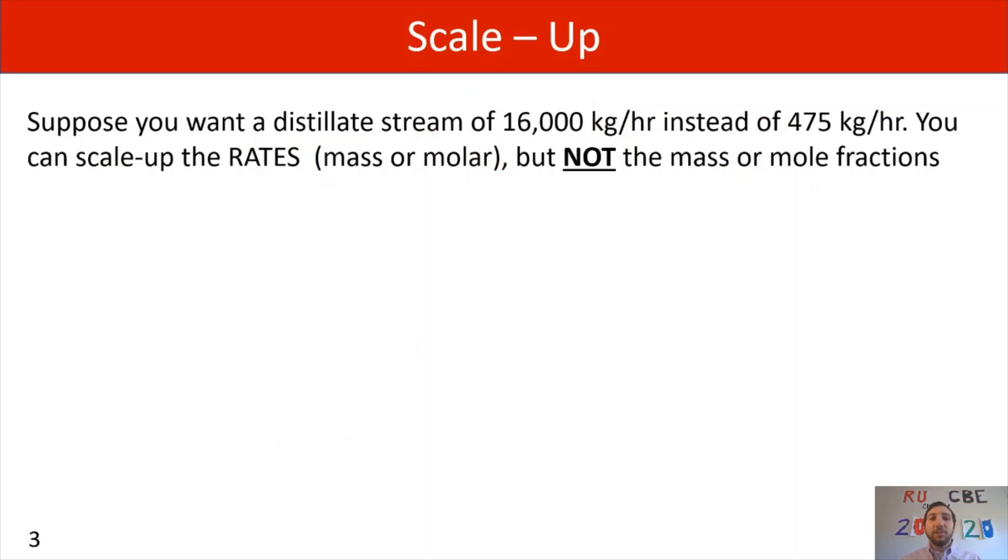So for us, let's suppose that we want the distillate stream to have a flow rate of 16,000 kilograms per hour instead of 475 kilograms per hour. You can scale up the rates, either the mass or the molar flow rates, in order to do this. I will say, though, you have to watch out. You cannot scale up mass or mole fractions.